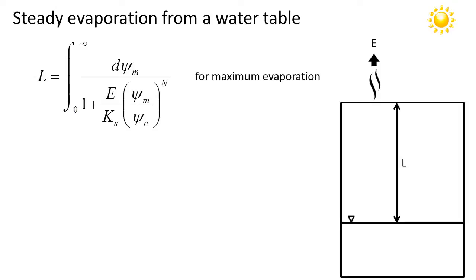Proceeding further, we notice that the integral on the left-hand side evaluates simply to minus L. And on the right-hand side, I've chosen to specify for the upper limit of the integration minus infinity. So the matrix potential at the soil surface has been set to minus infinity. And I've chosen this because this represents the maximum possible evaporation rate in this scenario.